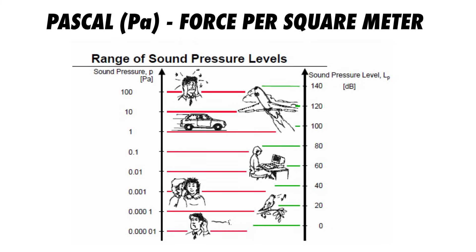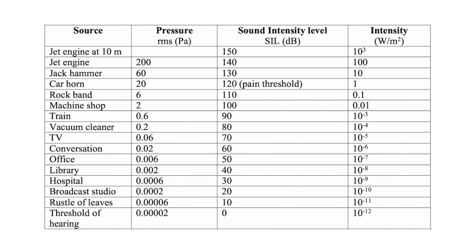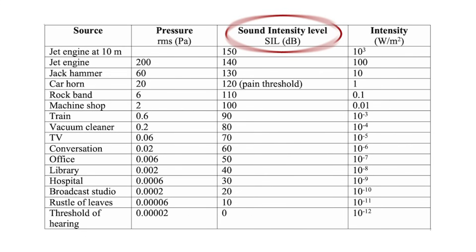The pascal is a unit that describes air pressure in terms of force per square meter. The limits of human perception of sound ranges from 20 micropascals to 20 pascals. It's much easier to discuss sound pressure in decibels rather than pascals, as you can see with this chart. Sound pressure is shown in pascals on the left compared to decibels on the right. Decibels represent these quantities in a way that is much easier for us to understand and interpret.